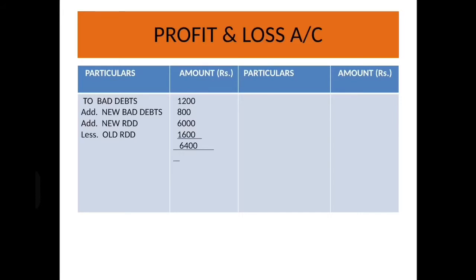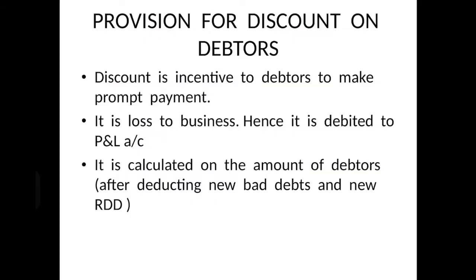Is it clear? Don't make mistakes in this — do it very carefully. Next is provision for discount on debtors. We all know what discount means. Discount is an incentive to debtors to make prompt payment — a concession given so that debtors make payment. It is a loss to business, so it is debited to profit and loss account.